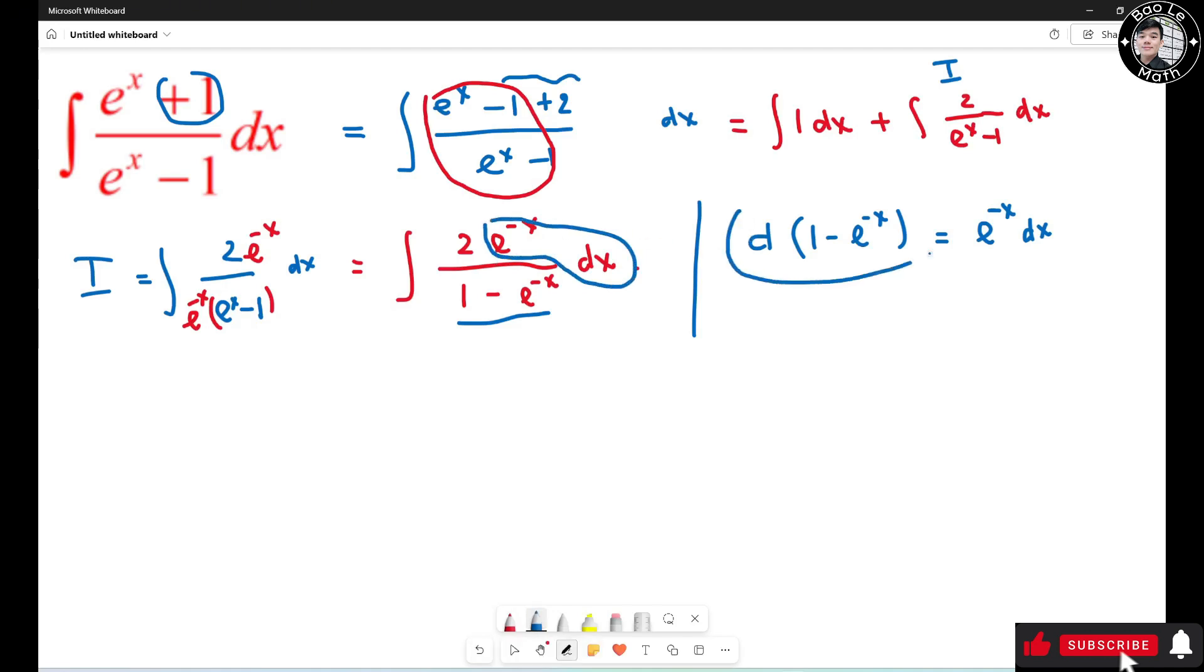So I have I equals, I can bring 2 to the front, the integral of d(1 minus e to the negative x) over 1 minus e to the negative x.